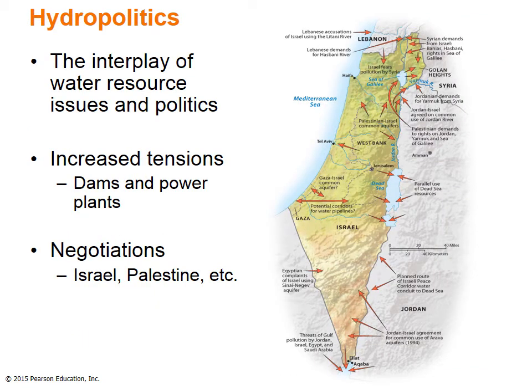Hydropolitics — the interplay of water resource issues and politics — is a dramatic and serious issue that raises tensions between countries sharing drainage basins. When a country dams a river crossing multiple boundaries, it greatly affects downstream water supplies. The Tikisi Dam project on the Nile, built in Ethiopia, threatens to disrupt downstream fisheries and irrigation in North Africa. Sudan's Merowe Dam on the Nile has raised major concerns in Egypt. A third project in Turkey on the upper Tigris and Euphrates has raised issues with Iraq and Syria, who argue that capturing their water could be a provocative political act.